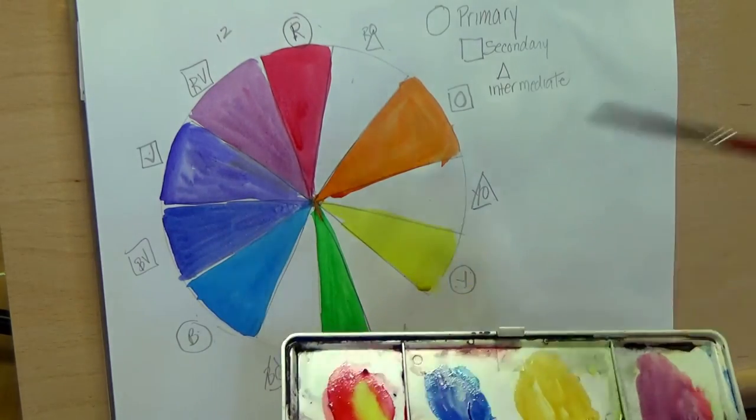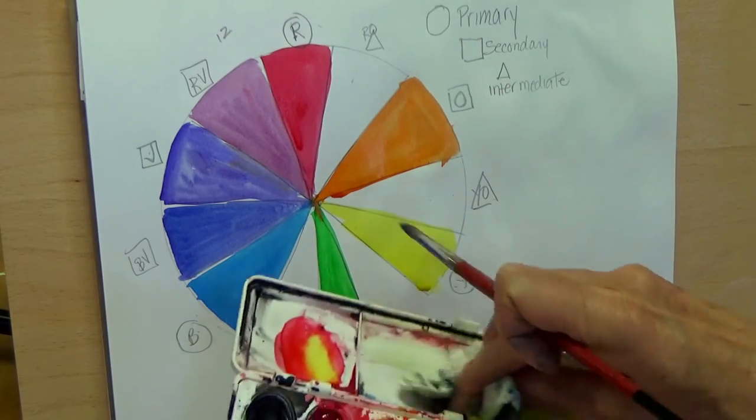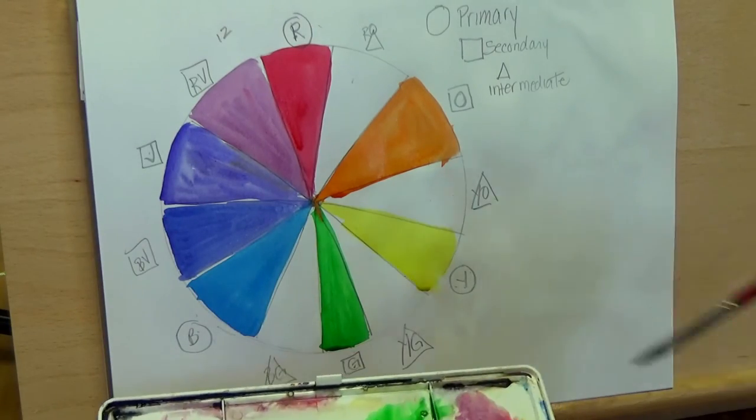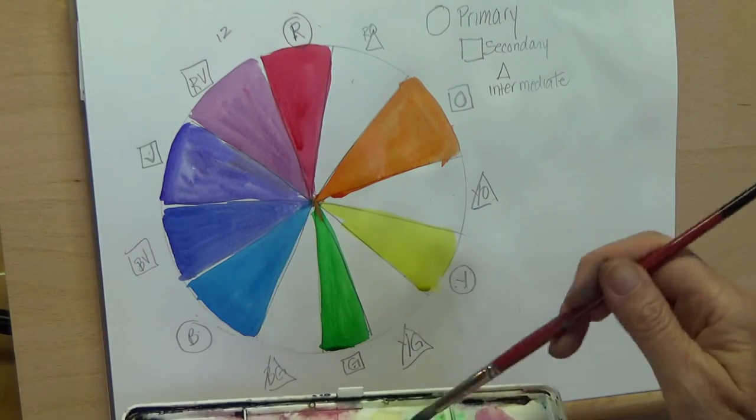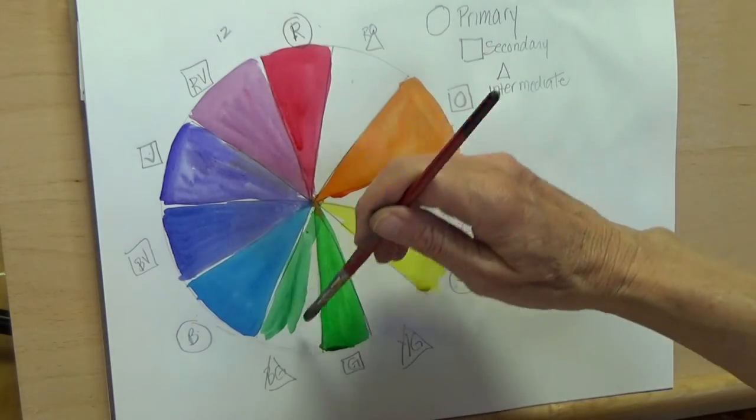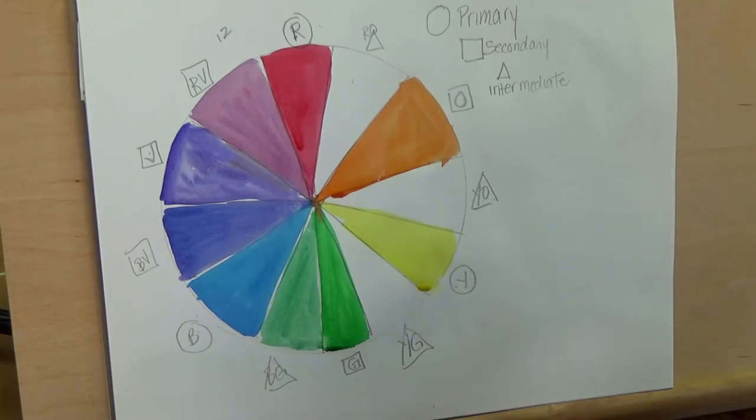See how I'm leaving a little bit of a white line in there just to make sure they don't bleed together. You can do that if you want. So blue-green, a little bit of blue, a little bit of green and you got a blue-green. I think that one could have a little more blue in it but it is definitely in between the blue and the green. Now yellow-green.